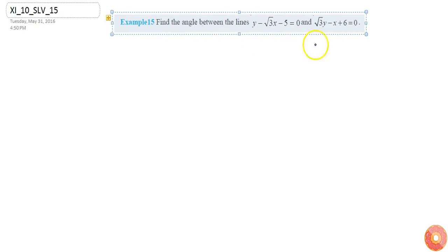To find the angle between these two lines, first we will need the value of slope of both equations. So if I change the given equations of lines into y equals mx plus c